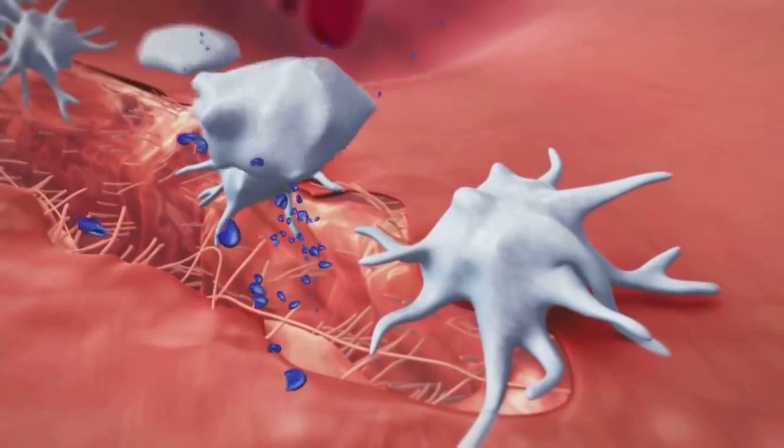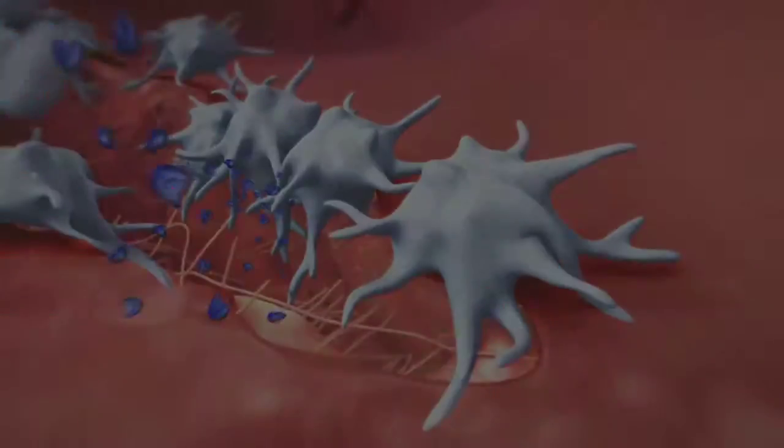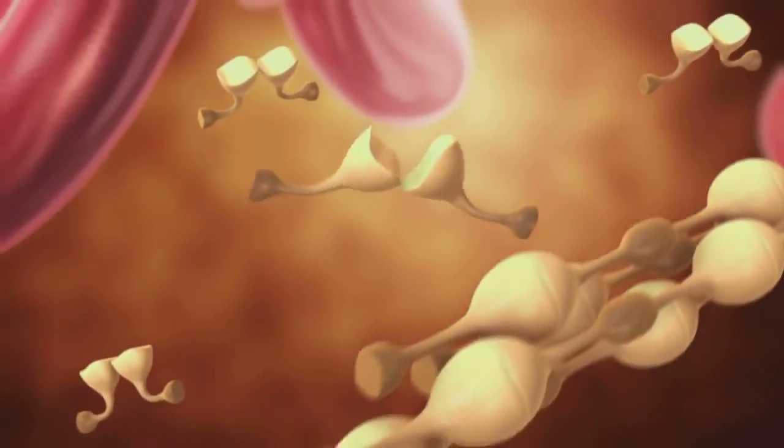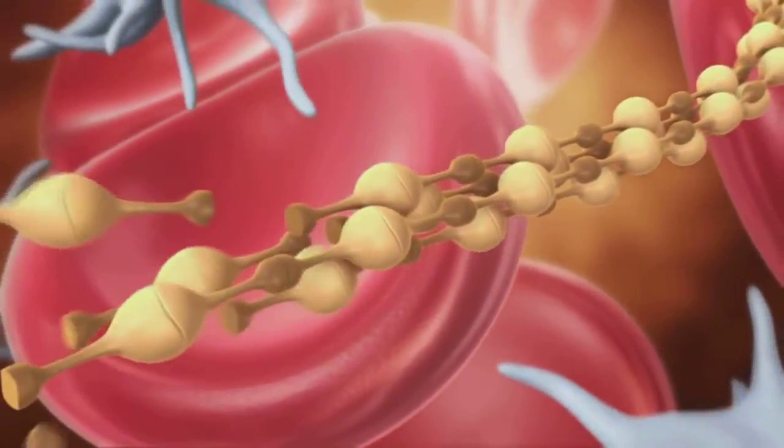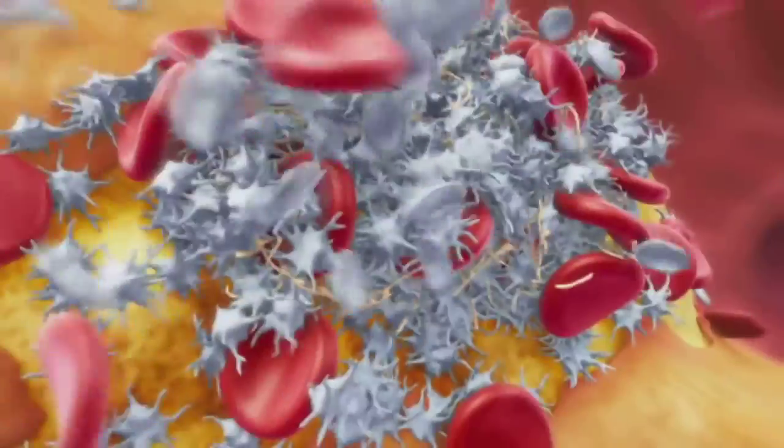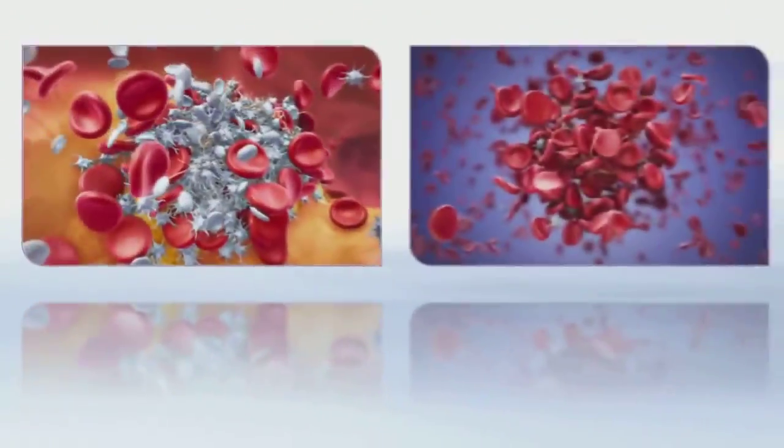These large amounts of thrombin cause the further activation of platelets and the enhanced formation of fibrin. Fibrin then forms strands, making up the mesh that stabilizes the platelet plug in an arterial clot and holds together the red blood cells in a venous clot.